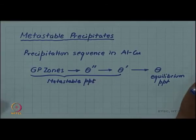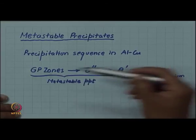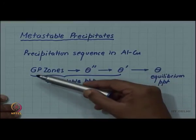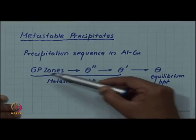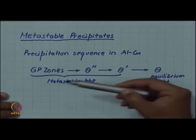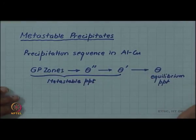And in fact, the real cause of hardening is these metastable precipitates — specifically the initial formation of GP zones — which leads to hardening.